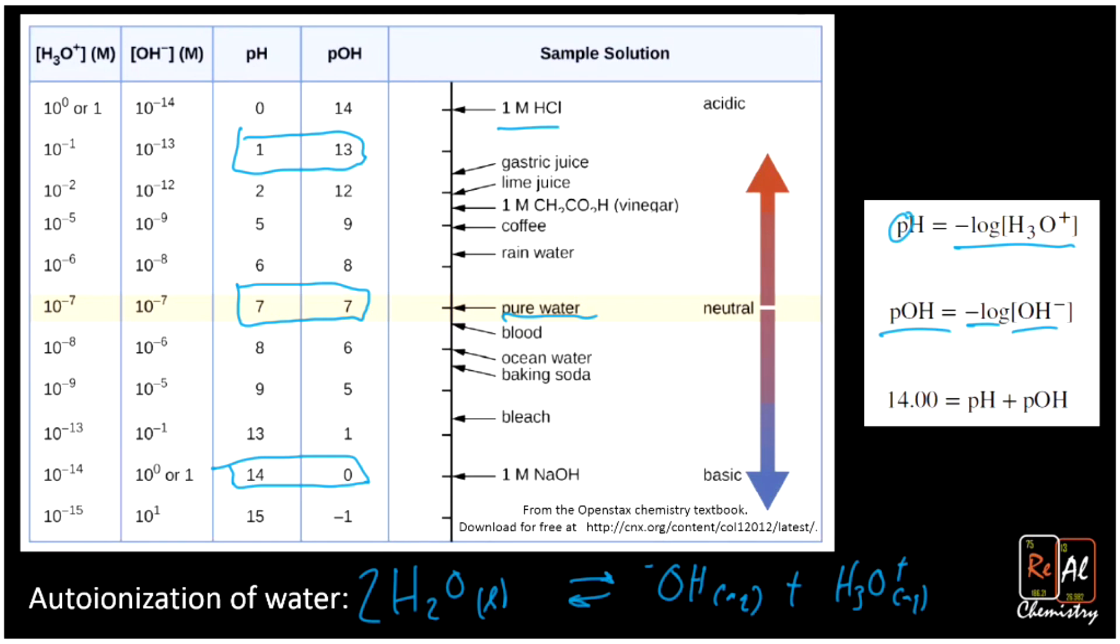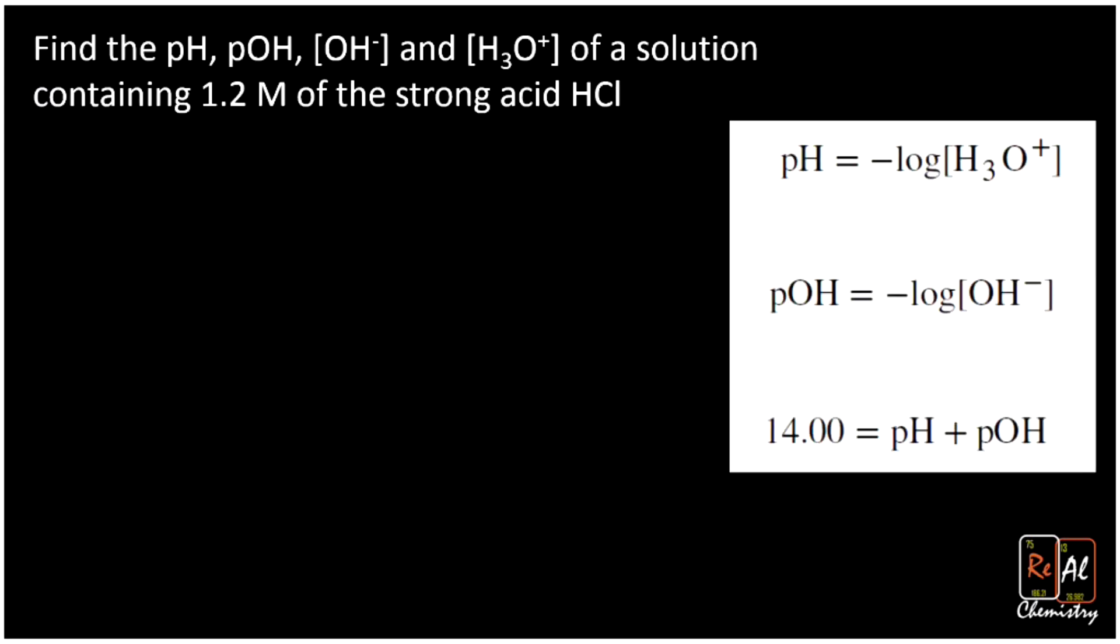Okay, now let's work a few problems where we go between these four variables. In this problem, we're asked to find the pH, the pOH, the OH-, and the H3O+ concentration of a solution containing 1.2 molar of the strong acid HCl.